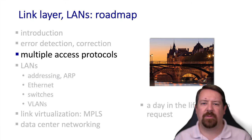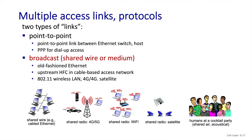We've now arrived at the section of the chapter where we look at multiple access protocols, meaning protocols that determine how a link is shared when multiple devices want to use it at the same time. We can break our links down into point-to-point or broadcast technologies. Point-to-point links only connect two devices, meaning one device's transmitter is connected to the other device's receiver and vice versa.